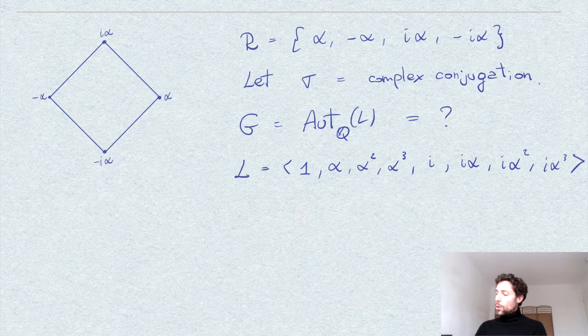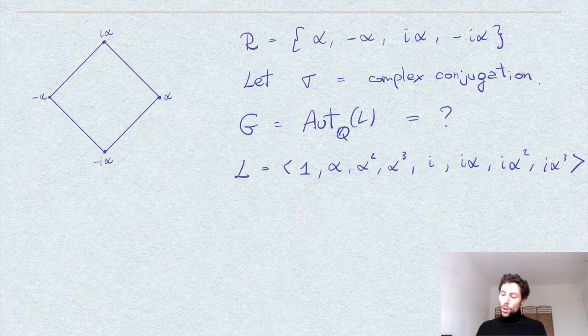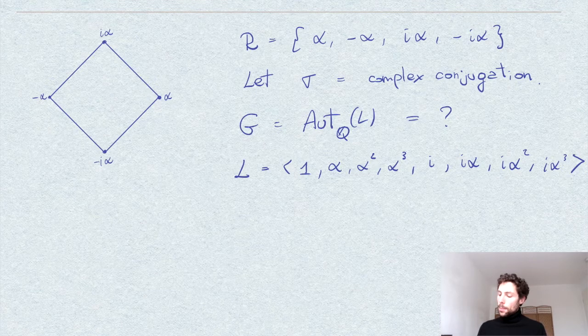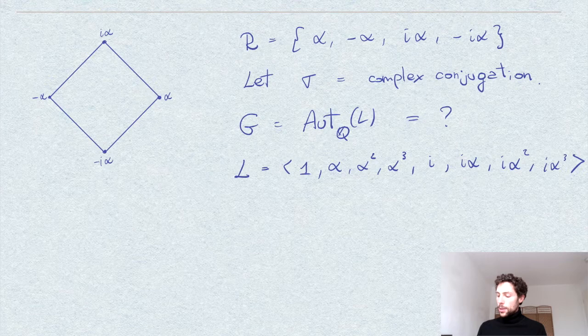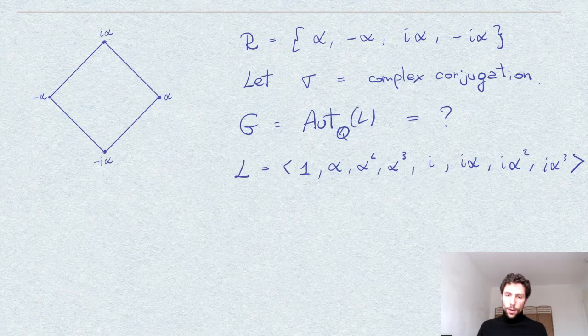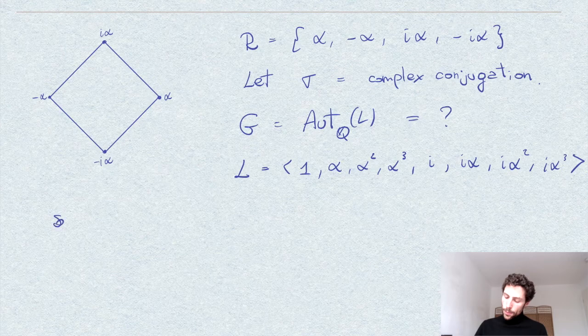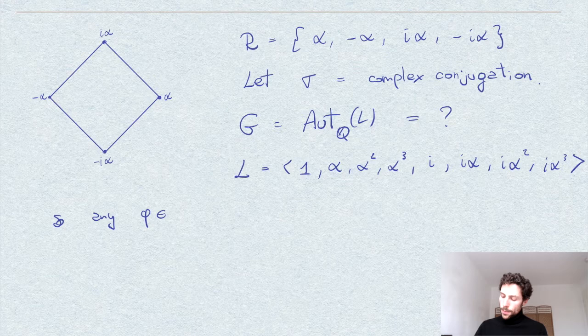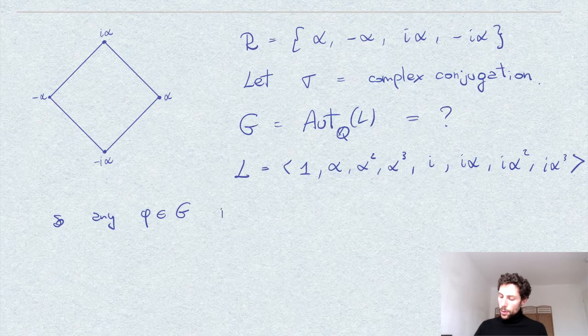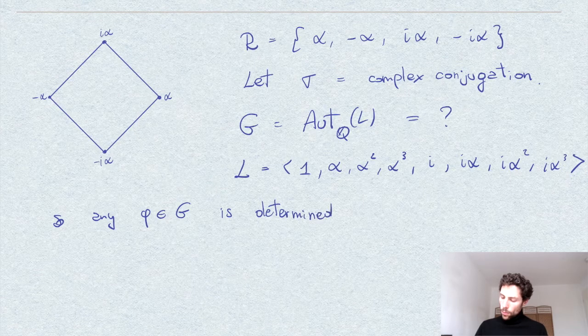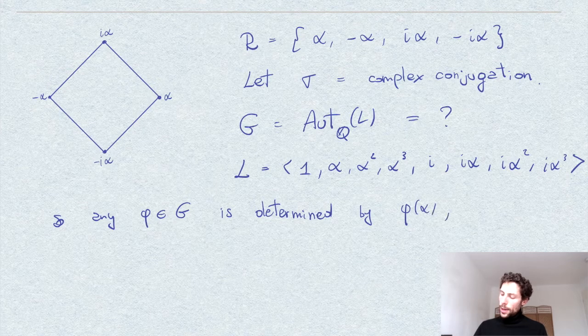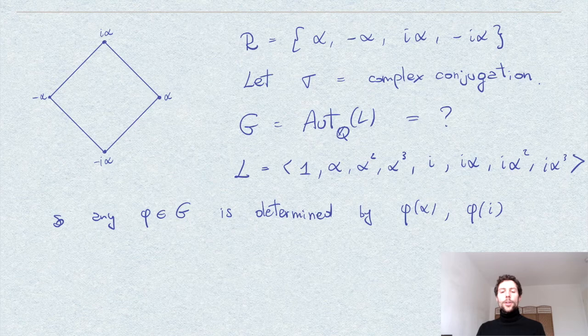But in particular, so any element in the Galois group, we have to, so we can be defined over this basis. So it would be determined clearly by its image on the elements alpha and i. So our first remark is that any automorphism in G is determined by phi of alpha and phi of i, these two elements.